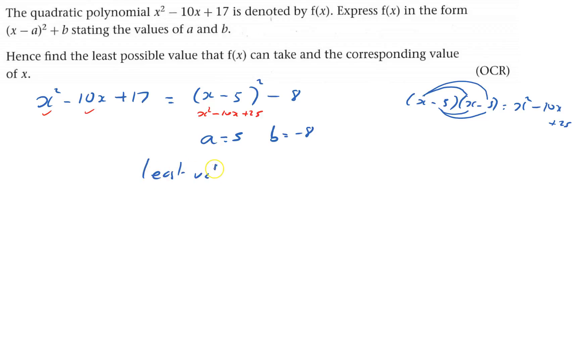So the least value is minus 8. And it occurs when the bracket is 0. So when x minus 5 is 0, that means when x equals 5. And that's the answer.